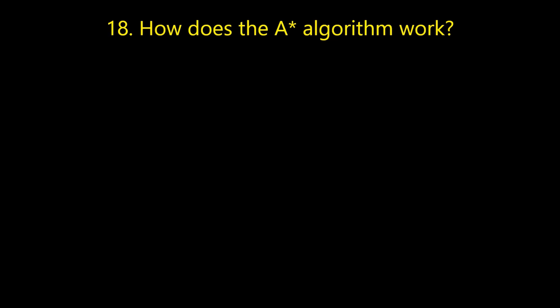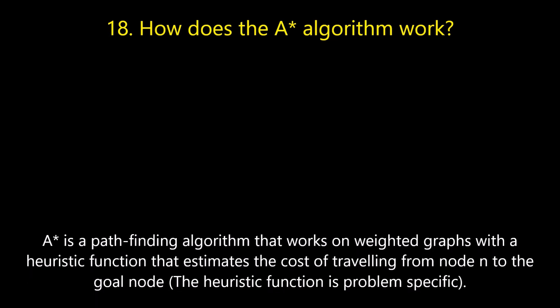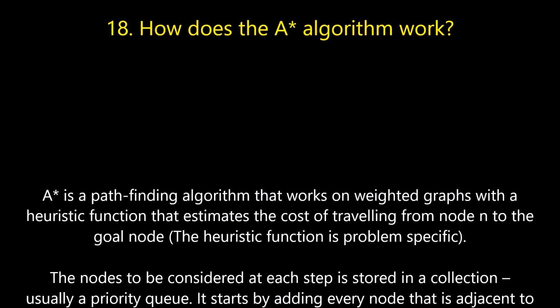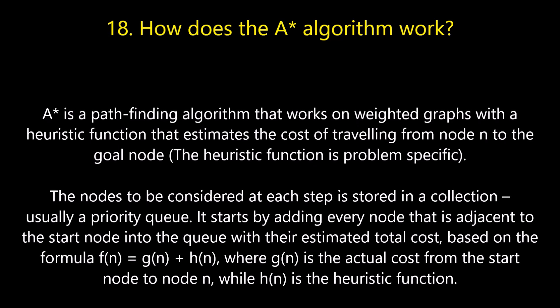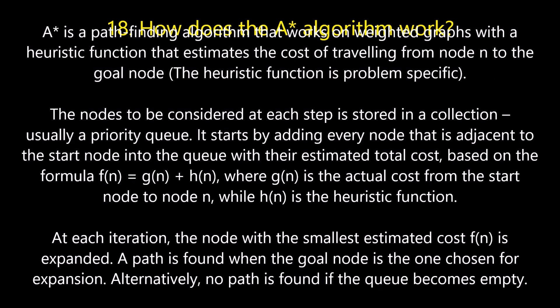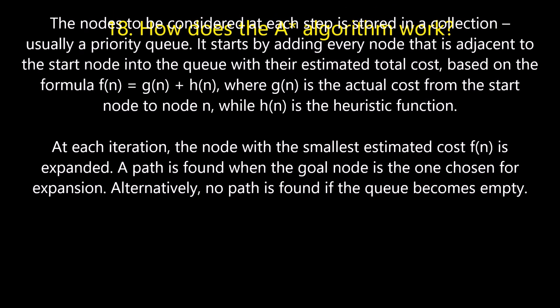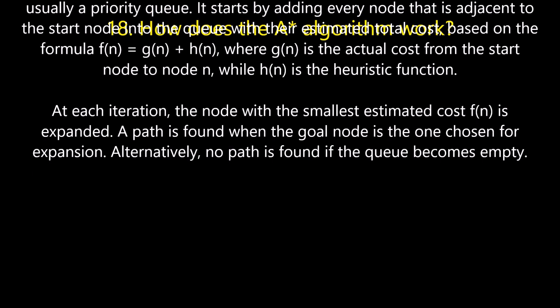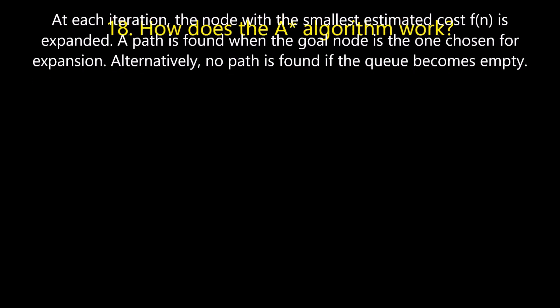Question number eighteen: how does the A* algorithm work? A* is a pathfinding algorithm that works on weighted graphs with a heuristic function that estimates the cost of traveling from node n to the goal node. The nodes to be considered at each step are stored in a collection, usually a priority queue. It starts by adding every node adjacent to the start node into the queue with their estimated total cost based on the formula f(n) = g(n) + h(n), where g(n) is the actual cost from the start node to node n, and h(n) is the heuristic function. At each iteration, the node with the smallest estimated cost f(n) is expanded. A path is found when the goal node is the one chosen for expansion; alternatively, no path is found if the queue becomes empty.